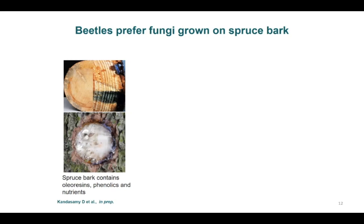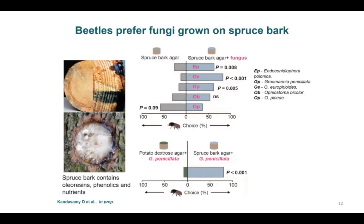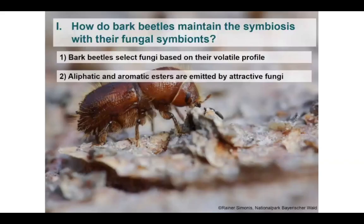The volatile profiles of E. polonica, Grosmannia europhioides, and Grosmannia penicillata were very attractive when grown on spruce bark agar, but not the volatile profile of Ophiostoma bicolor. Interestingly, beetles were repelled by the volatiles produced by the saprotrophic fungus Ophiostoma piceae. I then tested the behavior of beetles to the major symbiotic fungus Grosmannia penicillata grown on two different substrates. The majority of beetles preferred Grosmannia penicillata volatiles when grown on its natural substrate, spruce bark agar, indicating that the volatile profile of the fungus is different in its natural substrate.